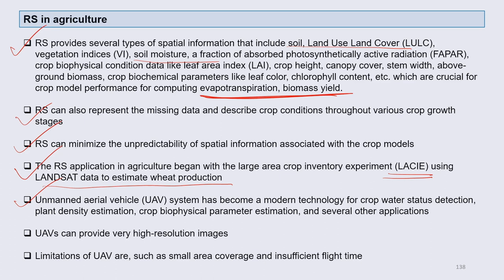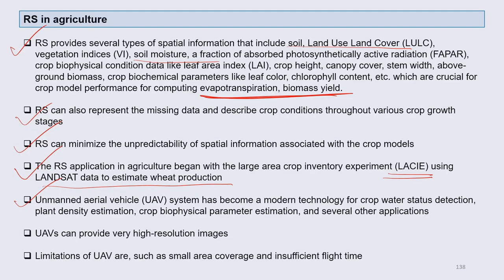Unmanned aerial vehicles — UAVs — have become very popular in various developed countries and are now slowly coming into use in India as well. UAV systems can be used for crop water status detection — determining how much water is present and whether irrigation is needed. One major concern in irrigated agriculture is that we irrigate even when it is not required, which wastes energy, electricity, and huge amounts of groundwater. UAVs can help you understand crop water status and irrigate fields only when needed, and can also help estimate plant density and crop biophysical parameters.